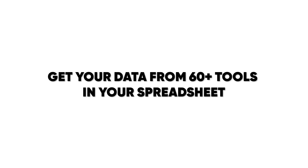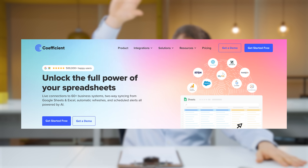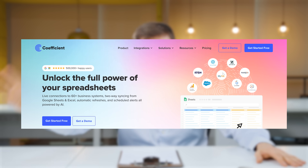Number one, they have live connections in spreadsheets to 60 plus business systems. That means we all use spreadsheets — Google Sheets and Excel — but we also use a lot of other tools like Salesforce and HubSpot, and those tools have a lot of data. You can use Coefficient to have all of that data from 60 plus tools in your spreadsheets, so your employees can continue working in spreadsheets, which is where they're most comfortable, instead of learning all of that other software.